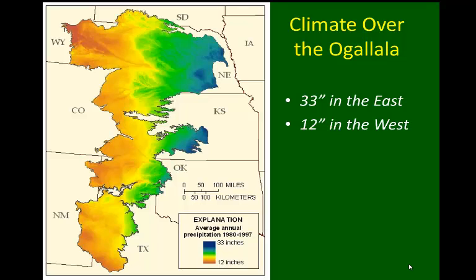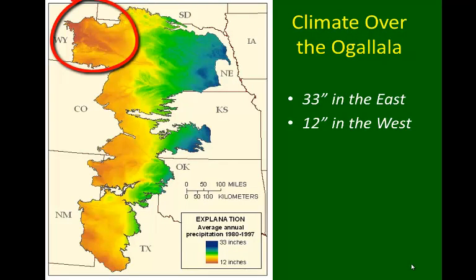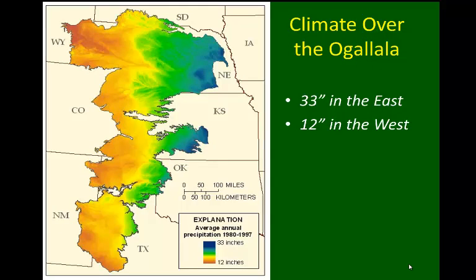Moving further east into the yellow, green, light blue, and darker blue colors, we get to higher and higher annual precipitation averages. The average annual precipitation in eastern Nebraska is close to 33 inches, whereas in some western regions of eastern Wyoming in those red areas, we only see about 12 inches of precipitation. So there's quite a vast gradient of precipitation applied annually across the Ogallala.